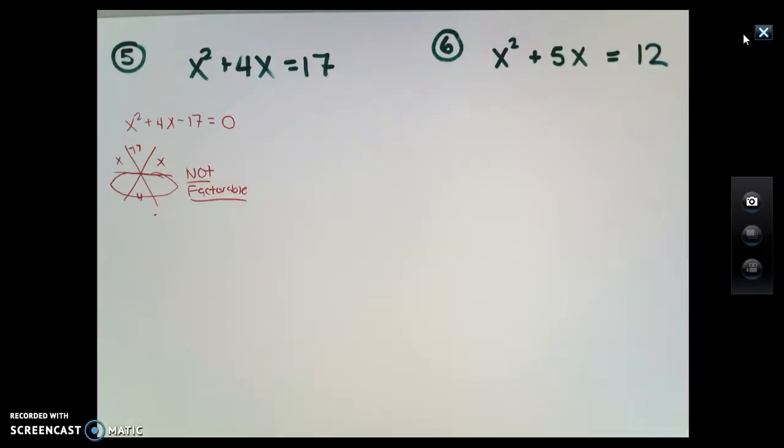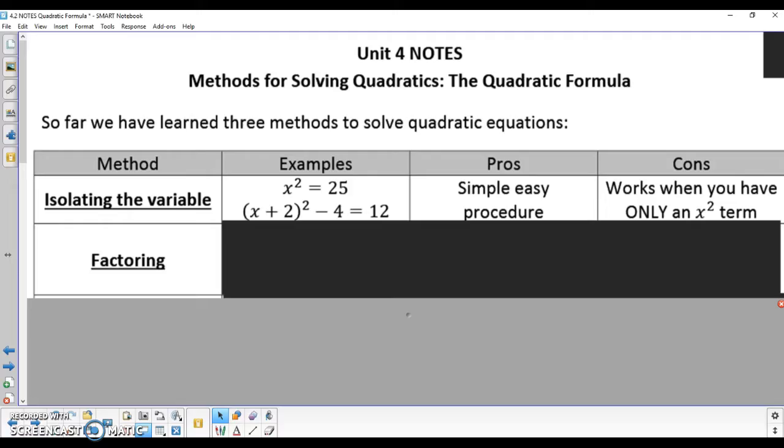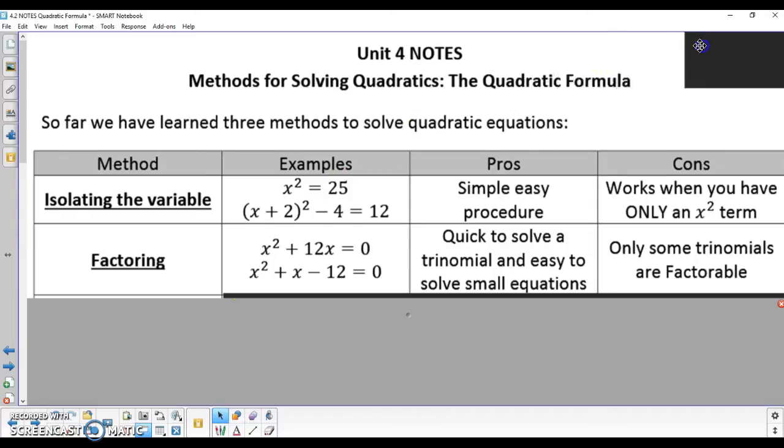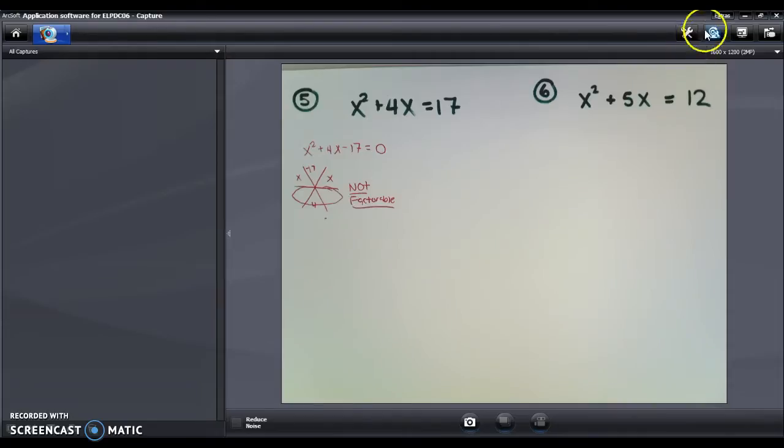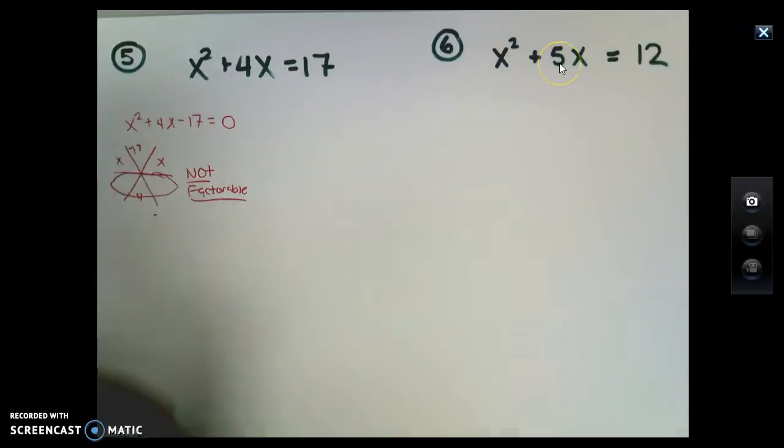Most quadratics aren't going to be factorable. While the factoring, the snowflake, the asterisk method, whatever you call it, is a great method and a quick way to solve a trinomial, the problem is only some trinomials are factorable. This led us to the problem we started this unit with: how are we going to solve for all quadratics? We learned a new method just recently called completing the square, and completing the square can solve any type of quadratic.